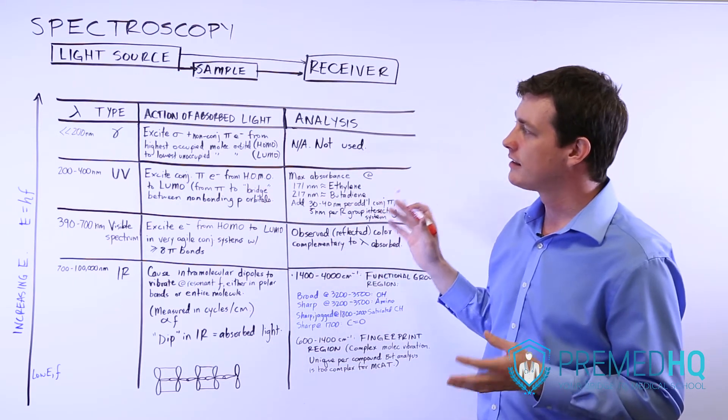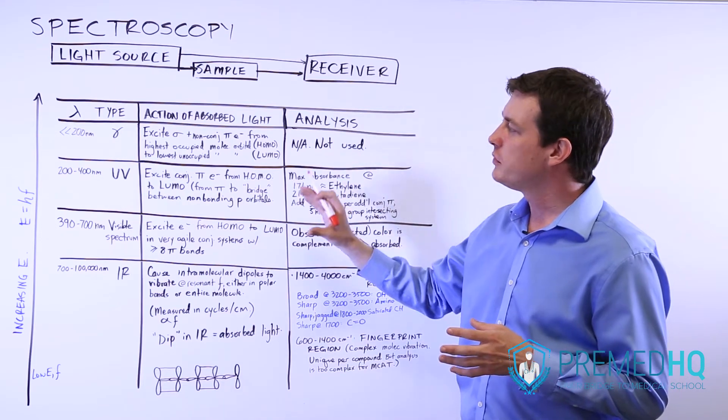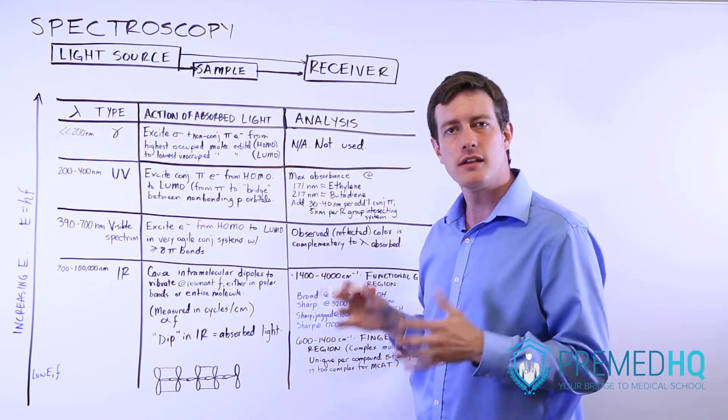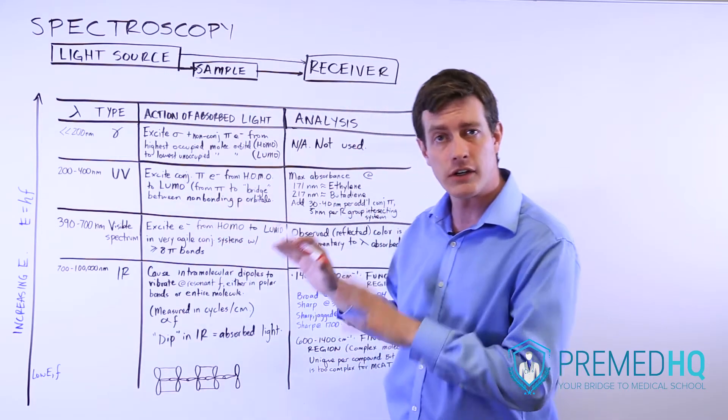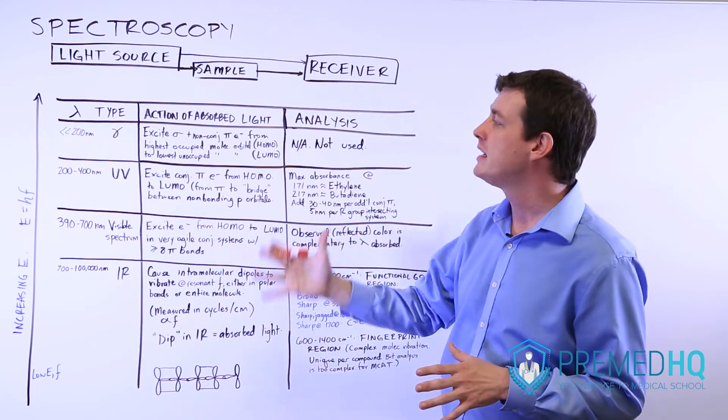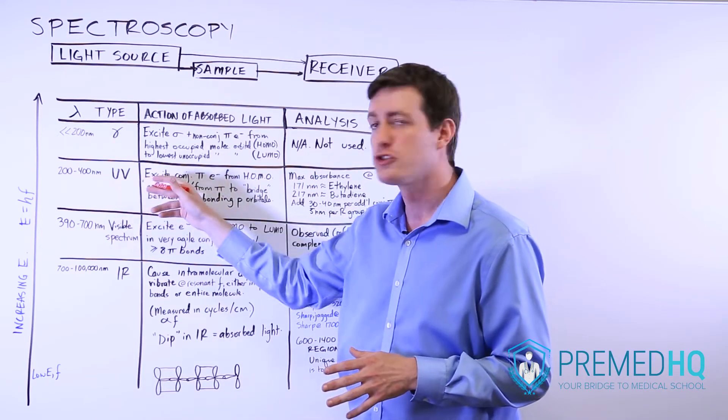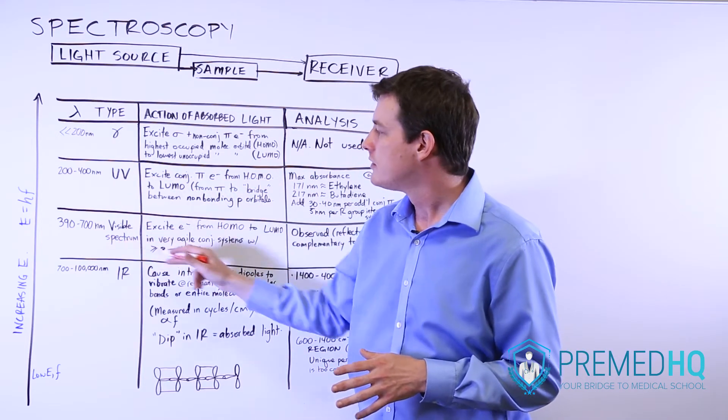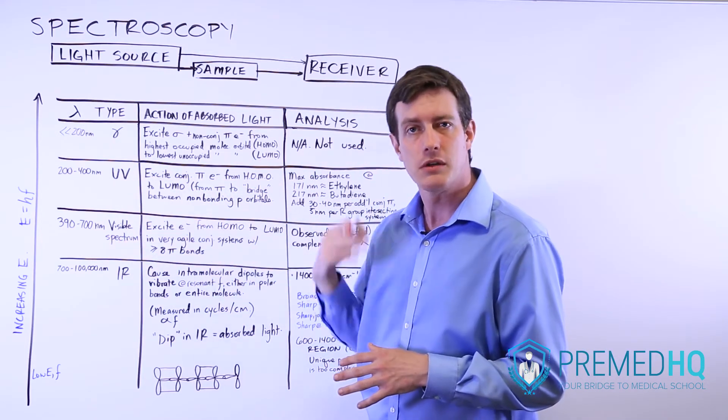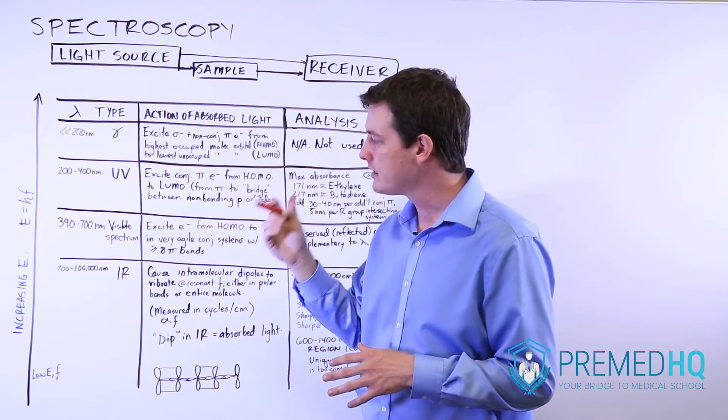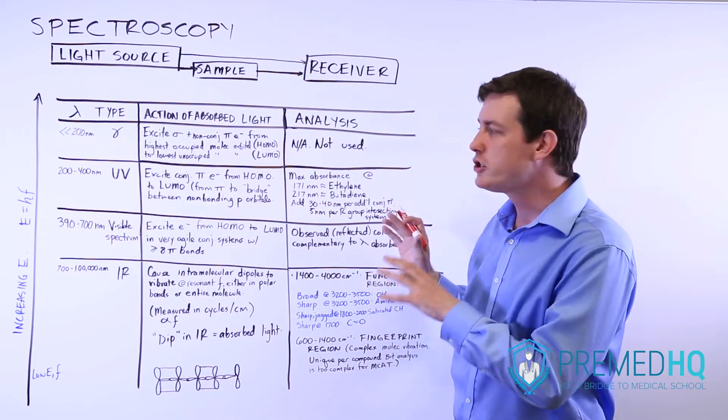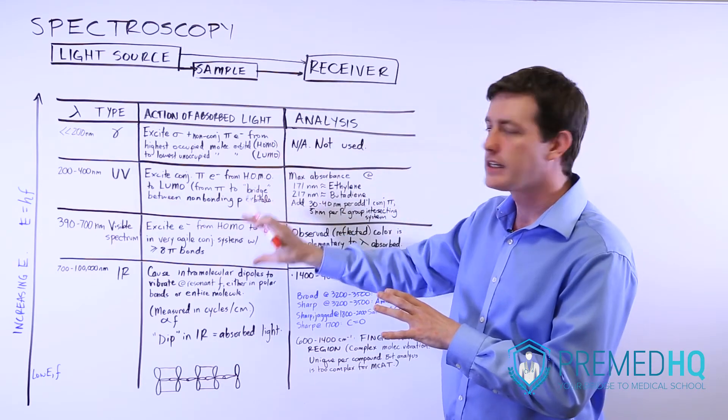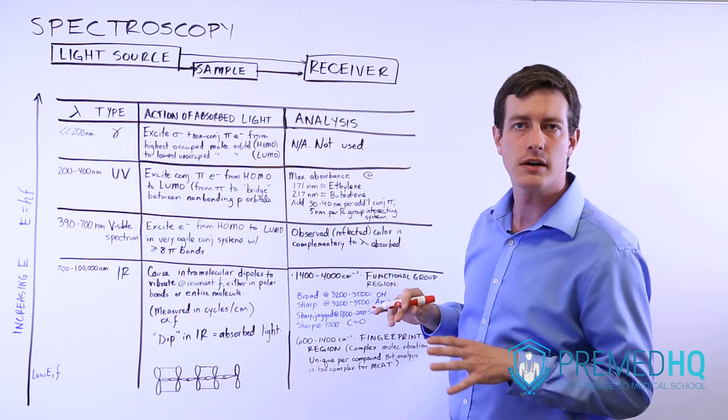The next thing to think about is how do we know what's present based upon the light that's absorbed. We've set up this table here and this is a very good way of organizing the many types of spectroscopy from ultraviolet spectroscopy to visible light spectroscopy, which is just something you pick up with your eyes, to infrared spectroscopy. These are major different types that all indicate different things about your compound.